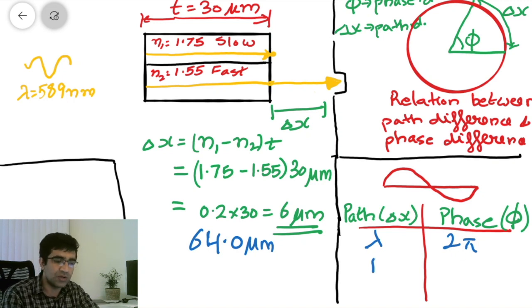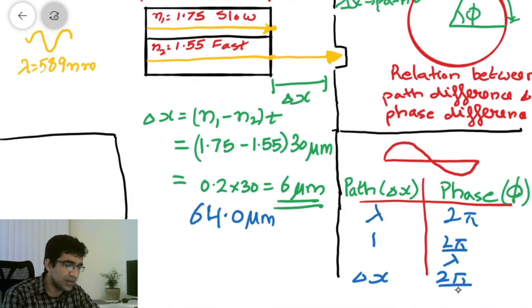So if you have a path difference of one wavelength, that corresponds to a phase difference of 2 pi. If your path difference is one unit, that will correspond to a phase difference of 2 pi by lambda. If your path difference is delta x, you can generalize it. So your phase difference will be 2 pi by lambda delta x.